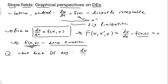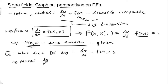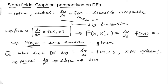So we have dx/dt equals f of x comma t — this is a given function. We know that x of t is our unknown, but we know dx/dt, and graphically this represents the slope of the tangent line to x of t at whatever time it is. So we know some information about x of t just by seeing this equation.